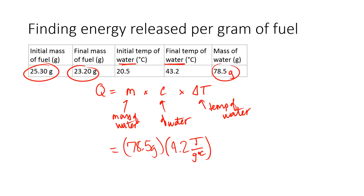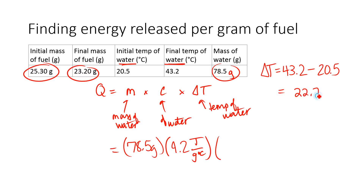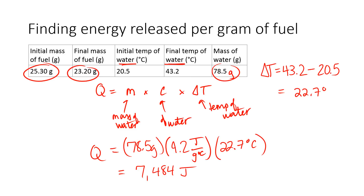Whatever you're measuring the temperature of is what you should use the mass and specific heat of. The temperature change of the water is delta T equals 43.2 minus 20.5 — final temperature minus initial temperature — which gives 22.7 degrees Celsius. So I multiply all that together to get my Q value: 22.7 times 4.2 times 78.5 gives me 7,484 joules. If I wanted to, I could convert that into kilojoules by dividing by 1,000. It all depends on what the problem asks.